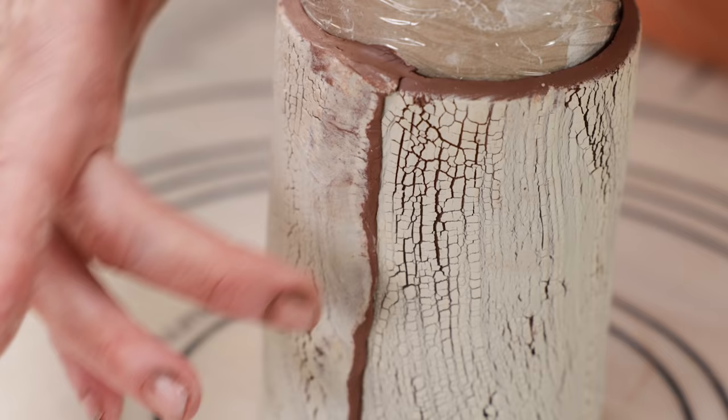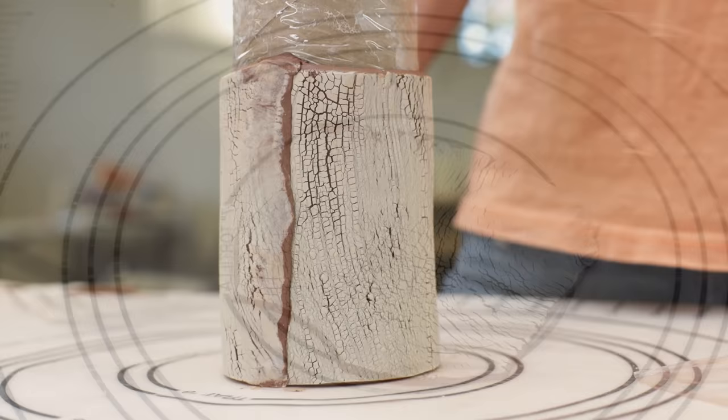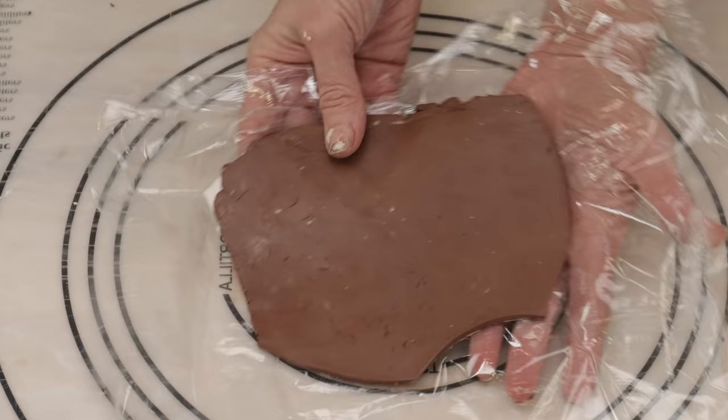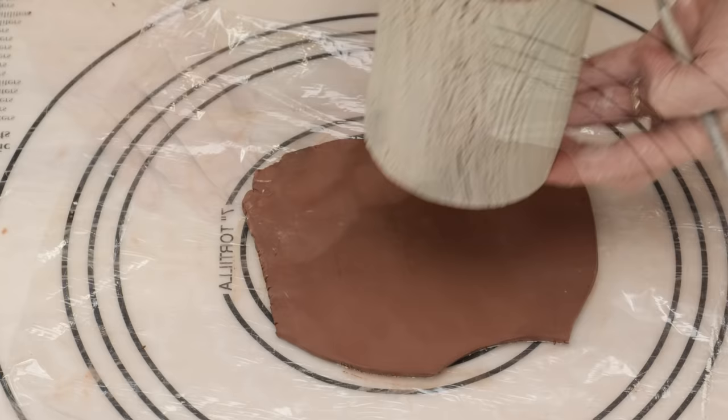To make the bottom of the cup I placed another sheet of plastic wrap over a scrap of the slab that I had already made. I flipped that over and gently ribbed the surface. I then placed the bottom of the cup over the slab and traced around the edge.